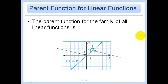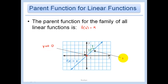Here we have a parent function for the family of all linear functions. The parent function would be f(x) = x. Because we want the most basic one — the most basic line is just y = x, where we have a slope of one and it goes through the point (0, 0). So the y-intercept is zero and the slope is one.